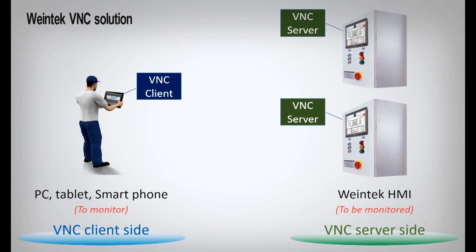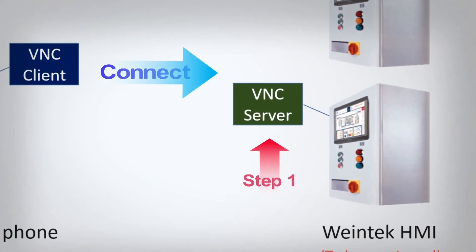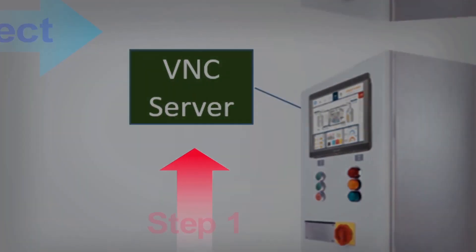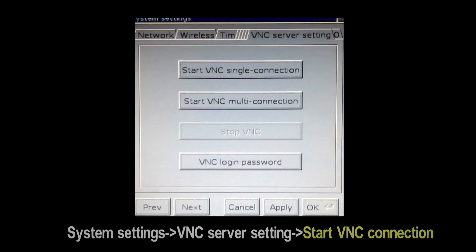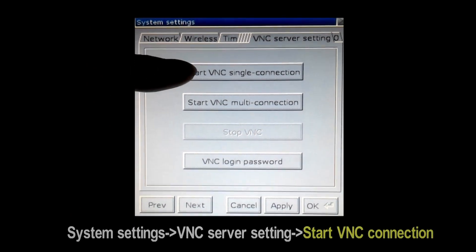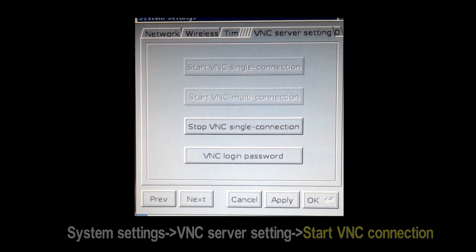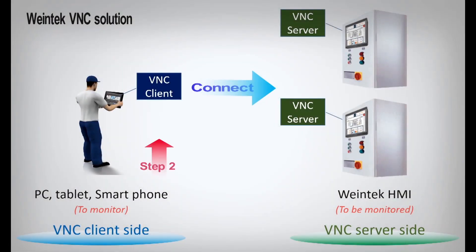When you are about to connect to the remote HMI by BNC, firstly, you have to make sure that on the server side, the HMI's BNC server is turned on. Go to HMI system settings, BNC server setting, then start BNC connection. Secondly, on the client side, you must have BNC client connectivity.